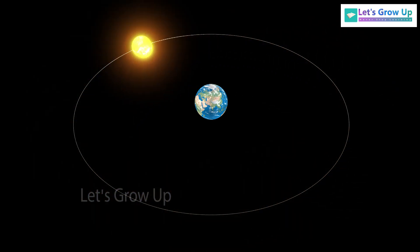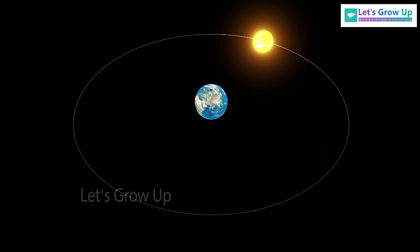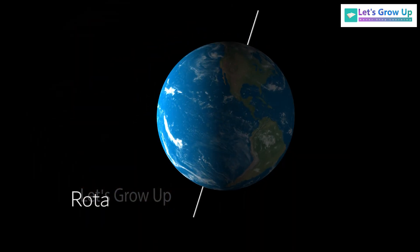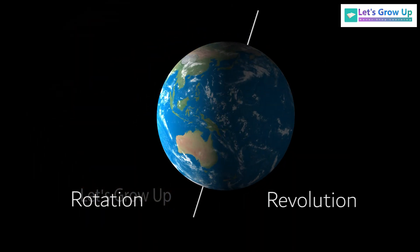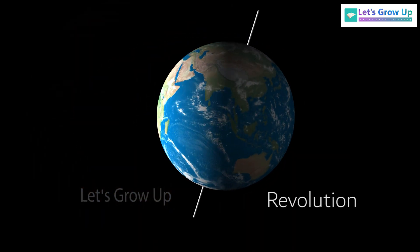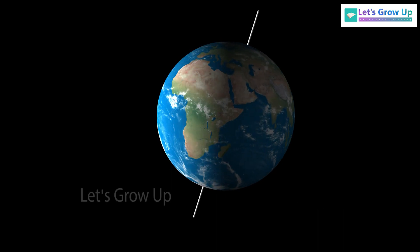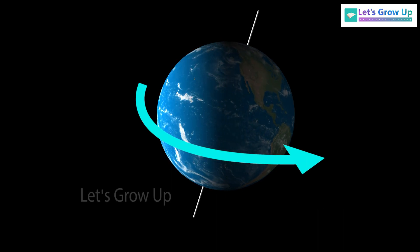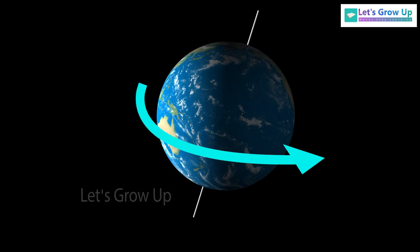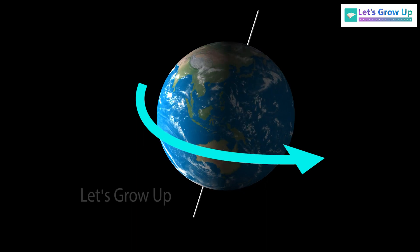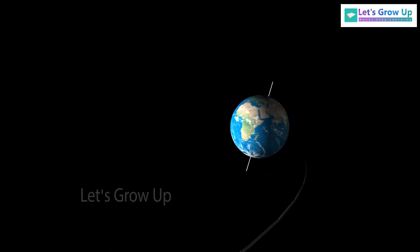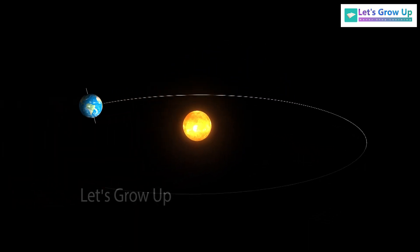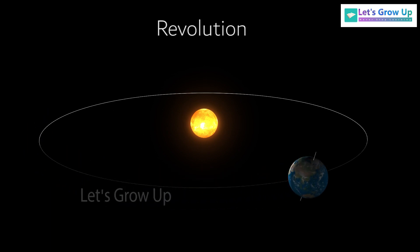Before starting the video, we want to clarify just two things: rotation and revolution. See this — when the earth spins or rotates around its own axis, it is called rotation of the earth. When the earth revolves around the sun, that movement is called the revolution of the earth.